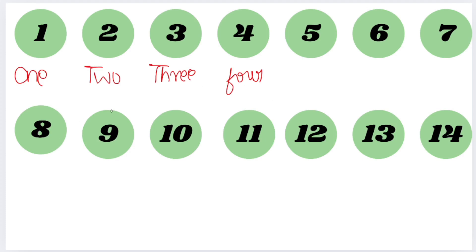I think the numbers you know, so you finish it up. Moving to 11 — we write it as E, L, E, V, E, N. That's 11.